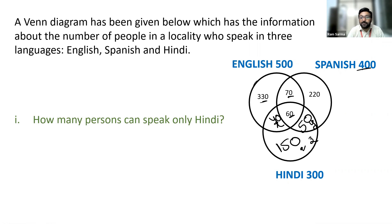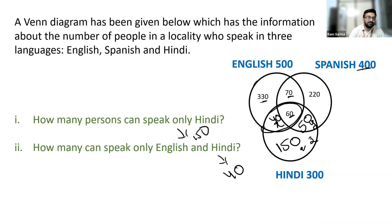The first question. How many persons can speak only Hindi? Only Hindi is 150. Let us look at the next one. How many speak only in English and Hindi? English and Hindi is 100. But the given question is about finding only English and Hindi. It means that Spanish should not be included into this. So your answer will be 40. 40 members speak only English and Hindi.